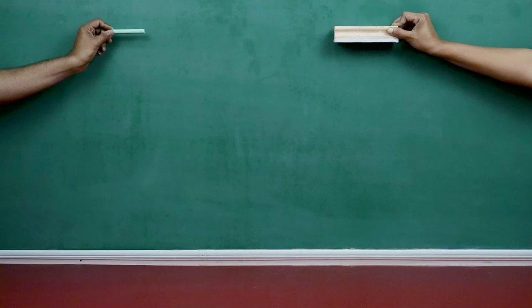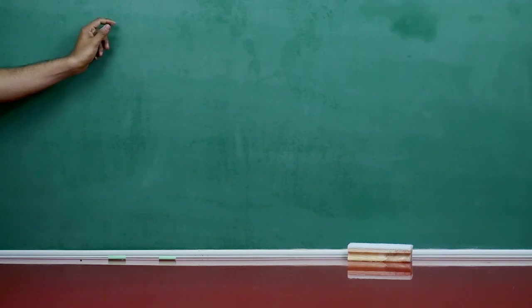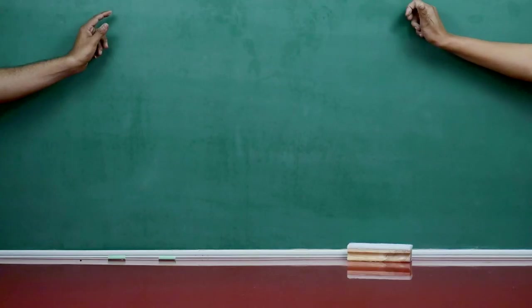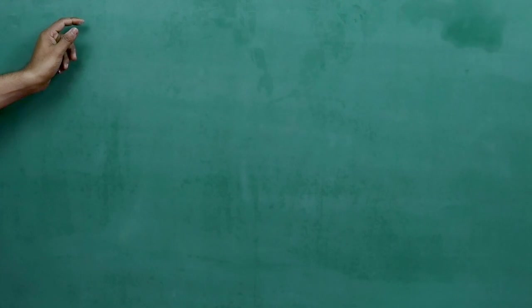For this activity, chalk and a duster are dropped from the same height simultaneously. Observe which one reaches the floor first. Do this multiple times to verify your observations. Before this activity, I asked the students to observe whether the heavier object will fall to the ground first or the lighter one. This question encouraged the students to observe carefully which object touched the ground first.